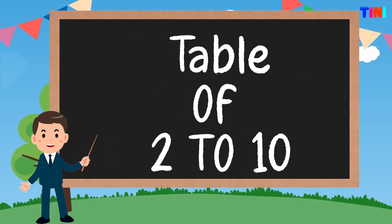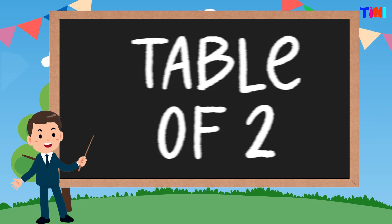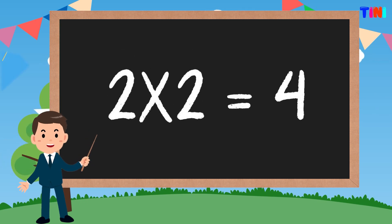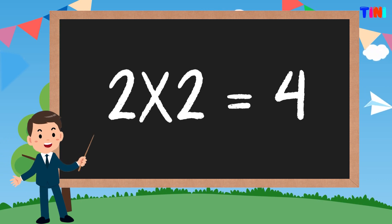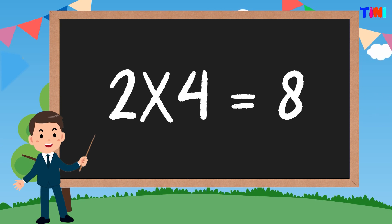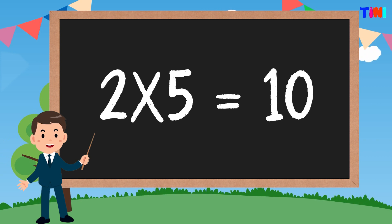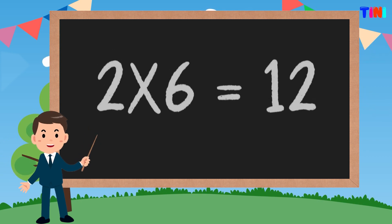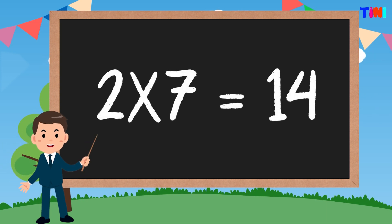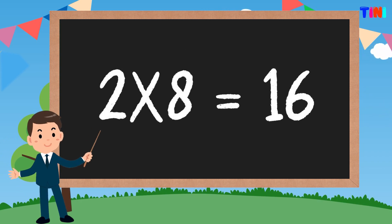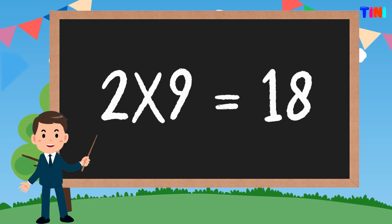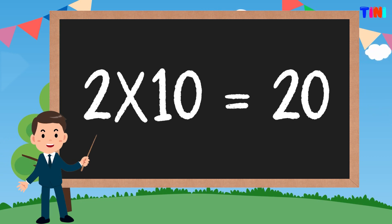Today we will learn the table of two to ten. Let's start with the table of two. 2 ones are 2. 2 twos are 4. 2 threes are 6. 2 fours are 8. 2 fives are 10. 2 sixes are 12. 2 sevens are 14. 2 eights are 16. 2 nines are 18. 2 tens are 20.